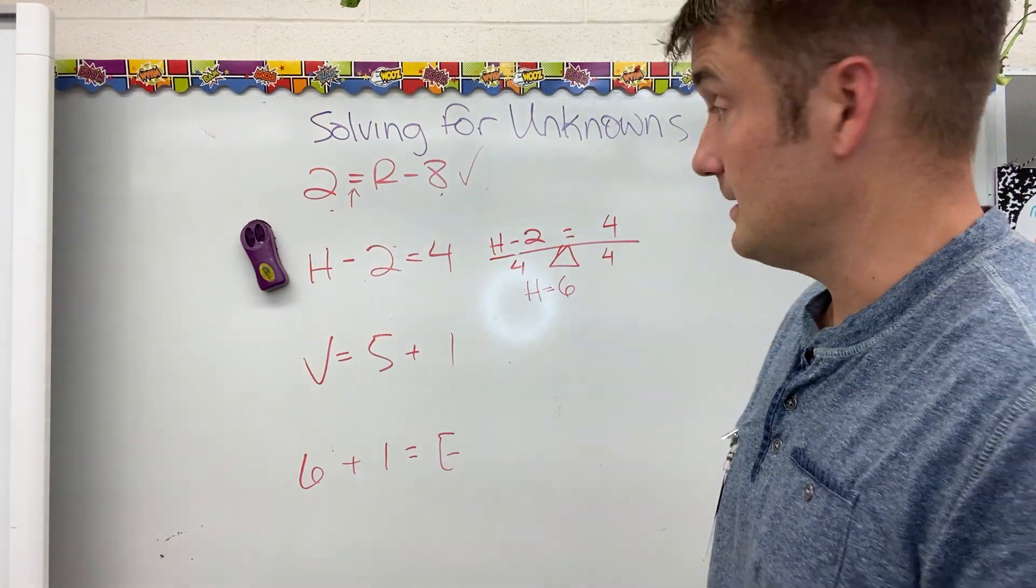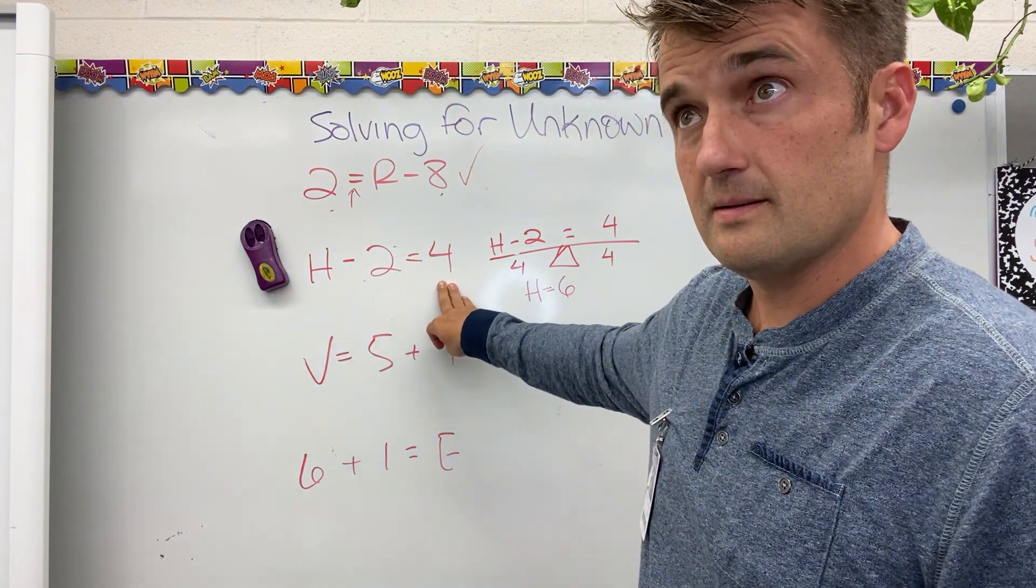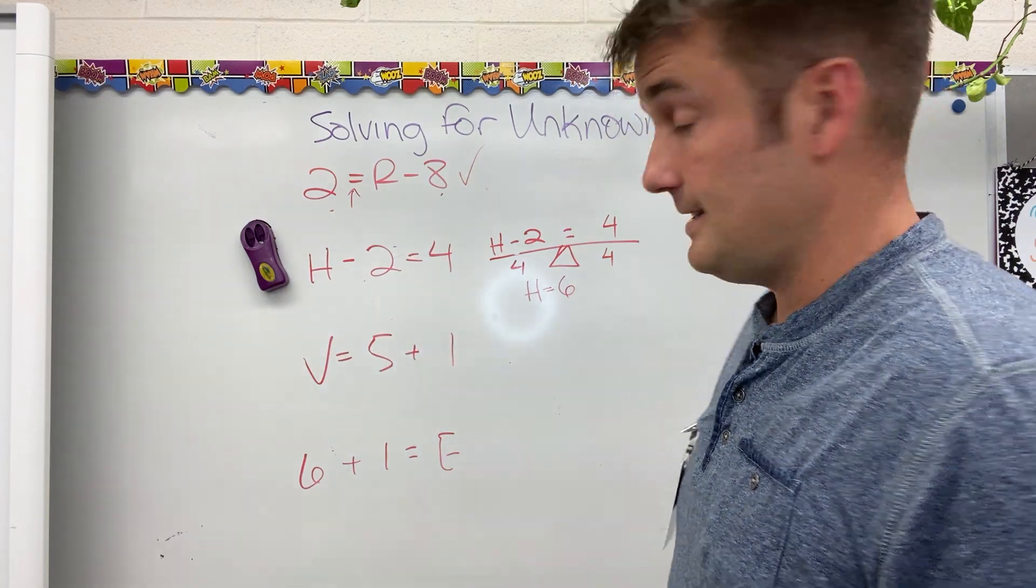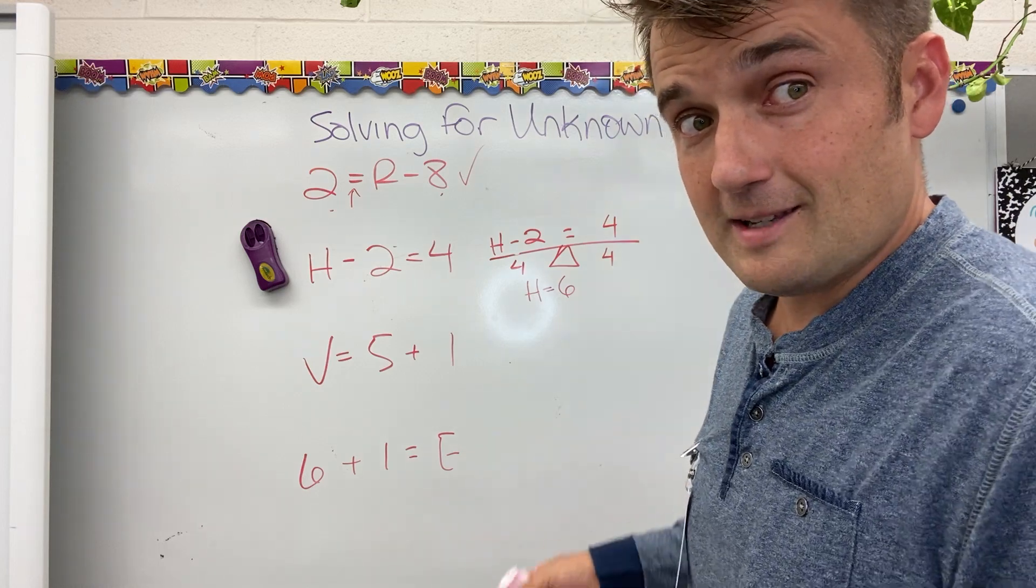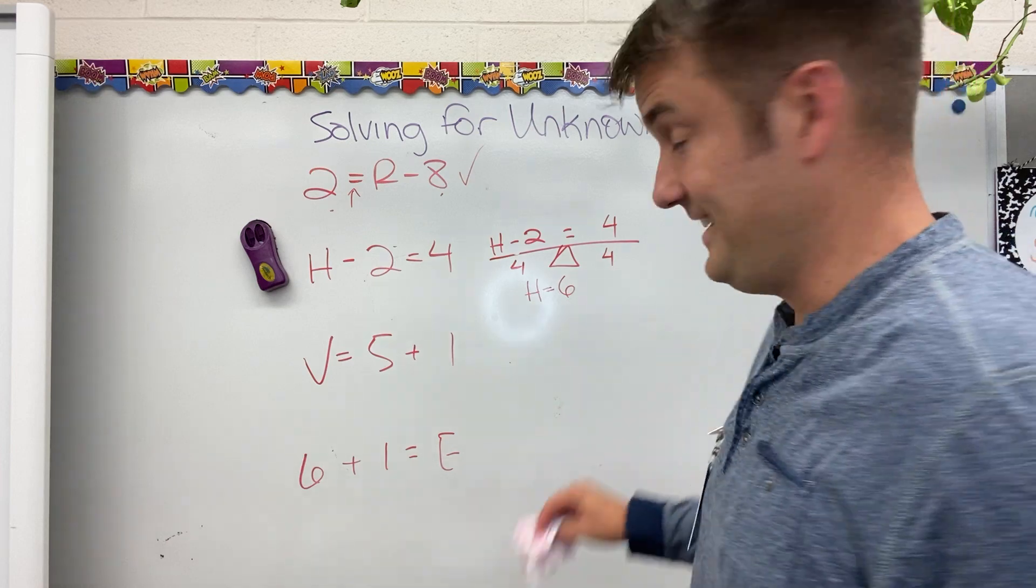h equals 6. Plug it back in and think about it. If h is 6, 6 minus 2 is 4. 4, yeah, it is. My math brain hasn't completely quit yet. That happens around 4 o'clock.